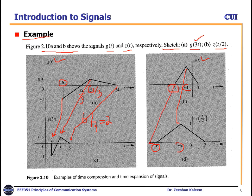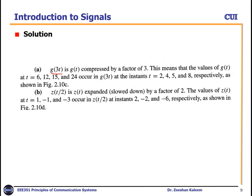So g(3t) is g(t) compressed by a factor 3: the values of g(t) at t equals 6, 12, 15, 24 occur in g(3t) at time instants 2, 4, 5, 8 respectively, as shown in figure 2.10c. Similarly, z(t/2) is z(t) expanded by a factor of 2: the values at t equals 1, minus 1, minus 3 occur in z(t/2) at instants 2, minus 2, minus 6 respectively.